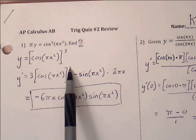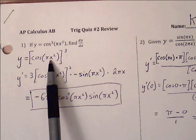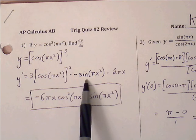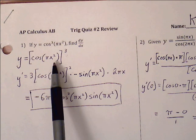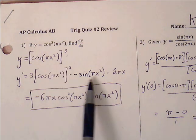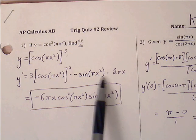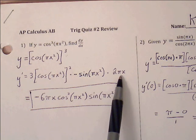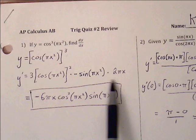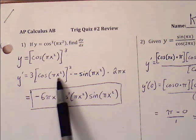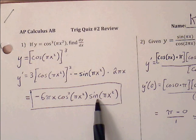Three bracket squared takes care of the outside function's derivative. The next function in is cosine of u, and its derivative is negative sine of u times u prime. So negative sine of u takes care of the cosine, but then pi x squared also needs its derivative applied, which becomes 2 pi x. Cleaning this up, we pull the negative, 2 pi x, and 3 all outside, leaving cosine squared(pi x squared) times sine(pi x squared).